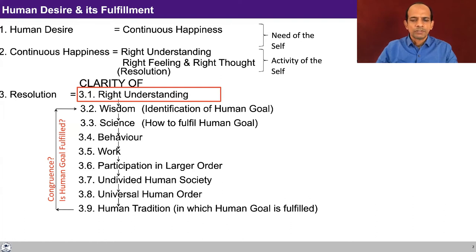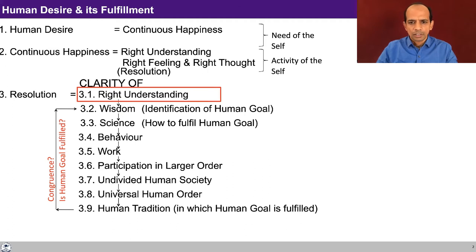So far we talked about the right understanding of human being. Then we discussed the right understanding of existence. And now we are going to talk about right understanding of the role of human being in this existence. We started discussing this in the previous lecture and now we are going to continue with that.